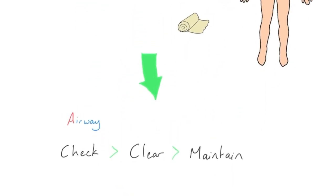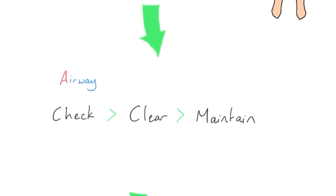Once we've managed catastrophic bleeding we look at the airway. We check inside it, and if there's anything solid we're going to remove it. You can use McGill's forceps, a pincer technique with your fingers if you're confident you won't get bitten, or you can scoop things out with a tongue depressor - which also lets you push the tongue down and visualize the back of the airway. If it's liquid, we can use postural drainage - roll them on their side and let it drain with gravity - or we can use suction.